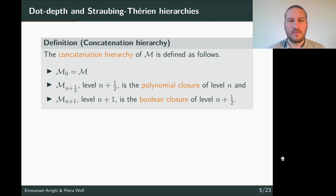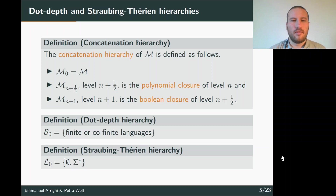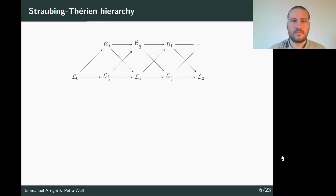We can now define the concatenation hierarchy, which is a general way to build the hierarchy. Given a base class M, the concatenation hierarchy starts with M and then alternates half-levels and full levels: level n+1/2 is the polynomial closure of level n, and level n+1 is the boolean closure of level n+1/2. The dot-depth hierarchy is the concatenation hierarchy with the base class containing finite and co-finite languages; for the Straubing-Thérien hierarchy we start with the empty language and Σ*.